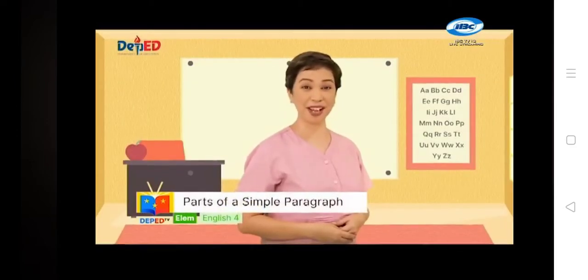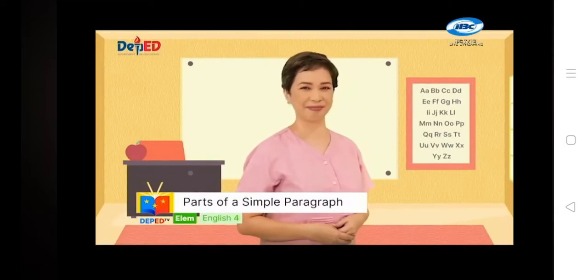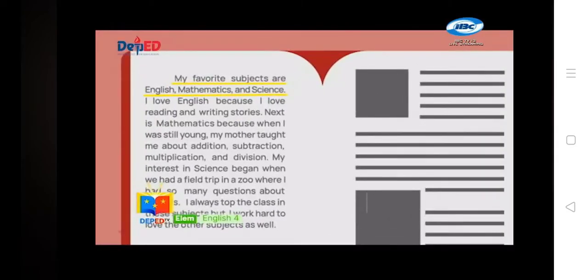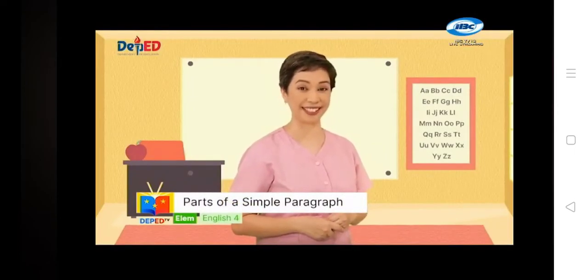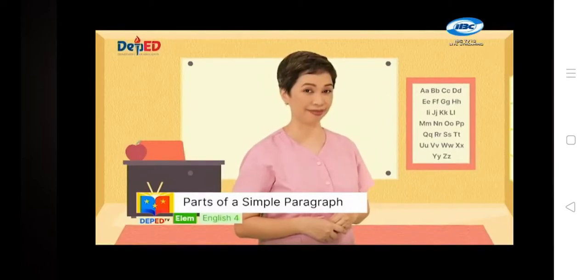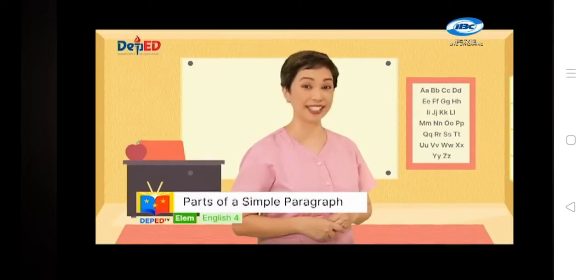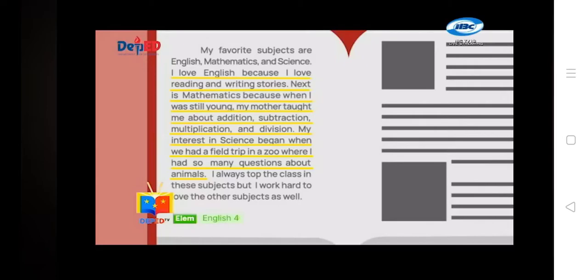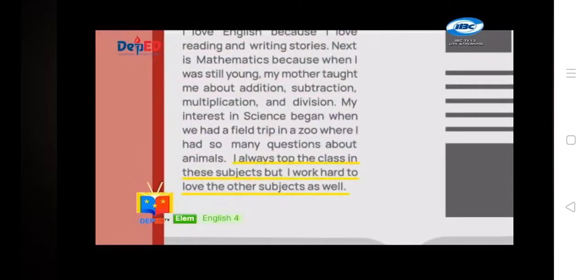Did you understand the paragraph? Let's divide it according to its parts. What is the topic sentence? If you answered sentence number one, you are right — it tells us the main idea, which is about the favorite subjects of the speaker. How many supporting sentences are there? Three! The second to fourth sentences explain why the speaker's favorite subjects are English, Mathematics, and Science. The concluding sentence is the last sentence, which tells us the key point of the whole paragraph.